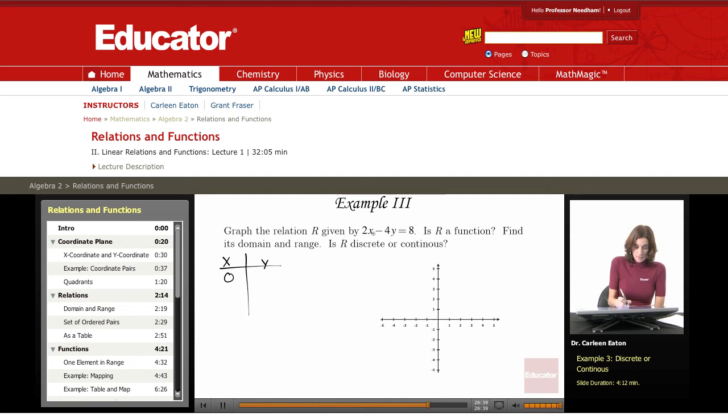When x is 0, we need to solve for y. Let's figure out what y is. That's 0 minus 4y equals 8. Therefore, y equals negative 2, dividing both sides by negative 4.